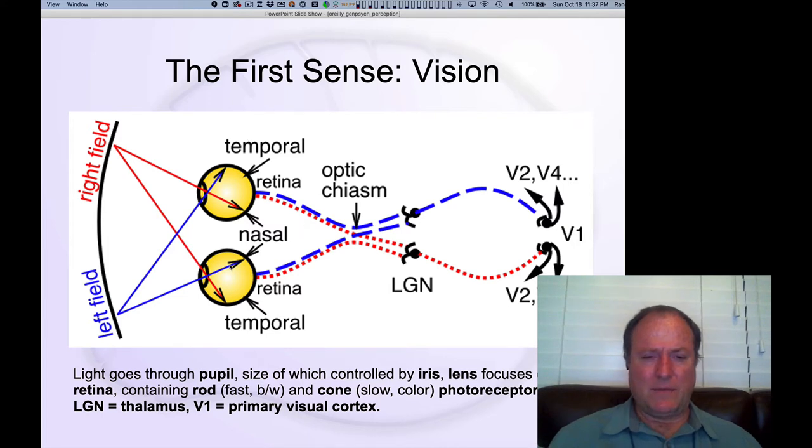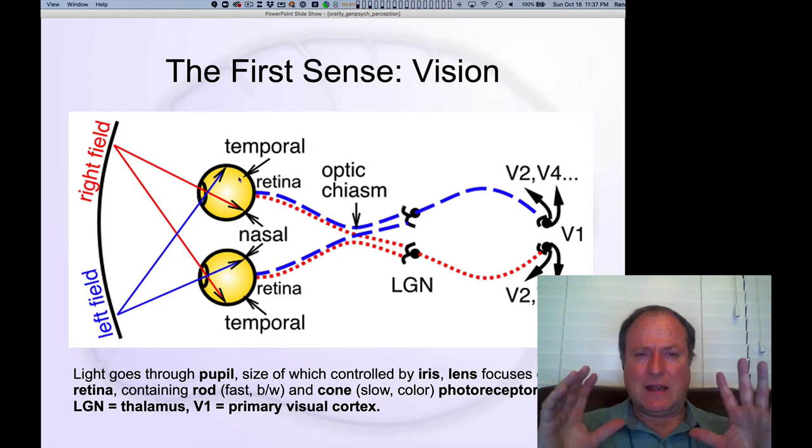You actually get different parts of those visual signals receiving from the right versus the left visual field. You can see that in terms of these rays that come in, and interestingly, after things get detected and transduced and turned into nerve signals in the retina through those rods and cones, we'll talk more about that in a second.